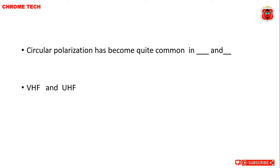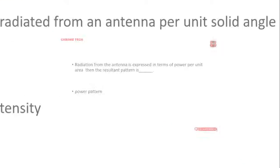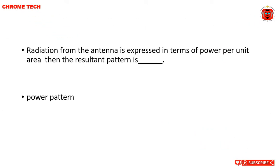The power radiated from an antenna per unit solid angle is defined as dash. The correct answer is radiation intensity. Radiation from the antenna expressed in terms of power per unit area — the resultant pattern is dash. The correct answer is power pattern.